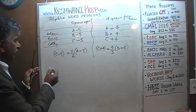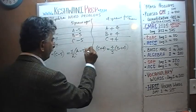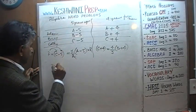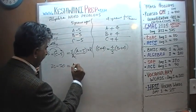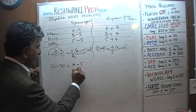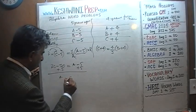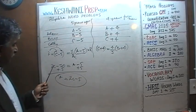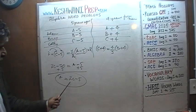Solving equation two for A: multiply both sides by 2. We get 2C minus 10 equals A minus 5. Add 5 to both sides: A equals 2C minus 5.